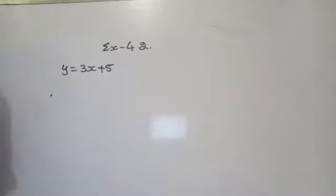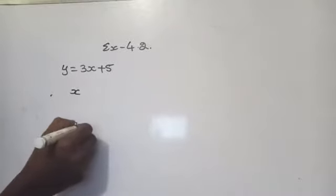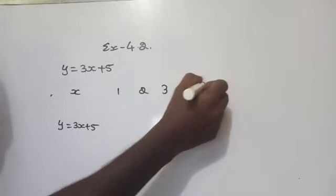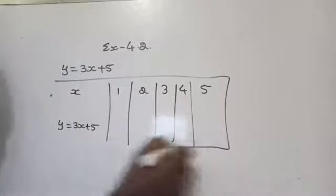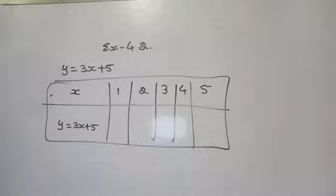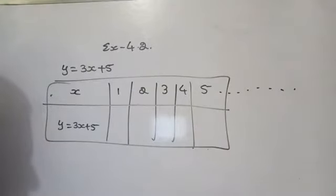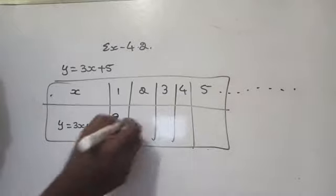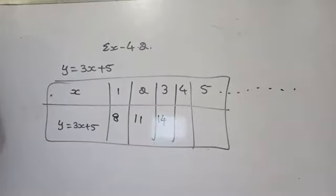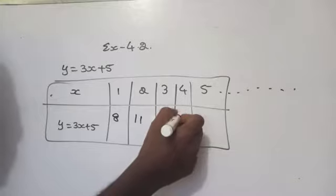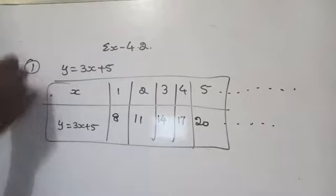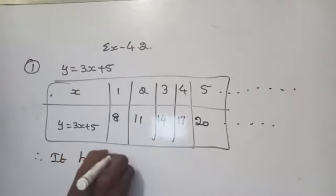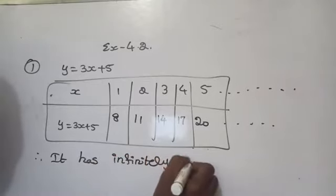How do we show the solutions for y equal to 3x plus 5? We can take x values as 1, 2, 3, 4, 5 and so on — since a, b, c are real numbers, we can take infinitely many x values. For x equals 1: 3 times 1 is 3, plus 5 is 8. For x equals 2: 3 times 2 is 6, plus 5 is 11. For x equals 3: 9 plus 5 is 14. For x equals 4: 12 plus 5 is 17. Then 20 and so on. Therefore, it has infinitely many solutions.